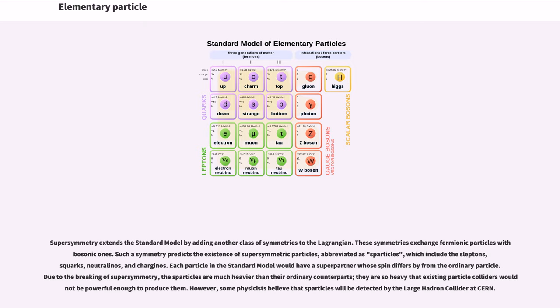Supersymmetry extends the standard model by adding another class of symmetries to the Lagrangian. These symmetries exchange fermionic particles with bosonic ones. Such a symmetry predicts the existence of supersymmetric particles, abbreviated as sparticles, which include the sleptons, squarks, neutralinos, and charginos.